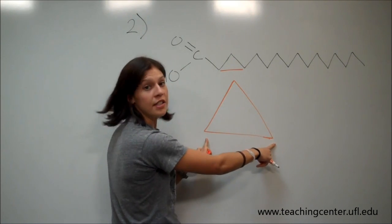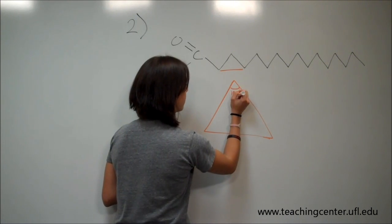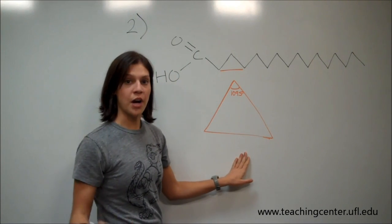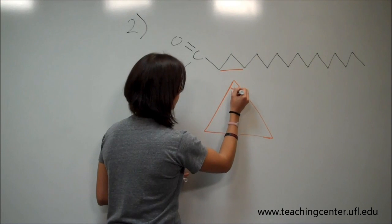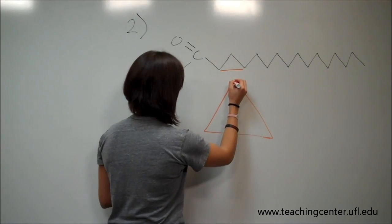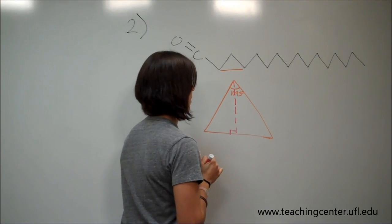So we're still looking for this distance. I just want to clarify that. So this is 109.5 degrees. But in order to find this, we have to make a right triangle to do some trigonometry. So I'm going to cut this in half. There's our right angle.